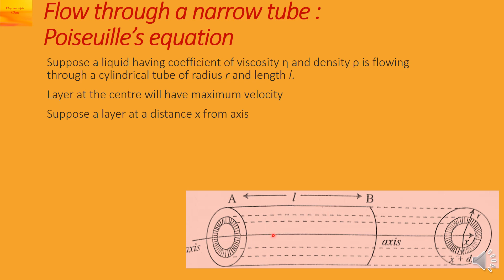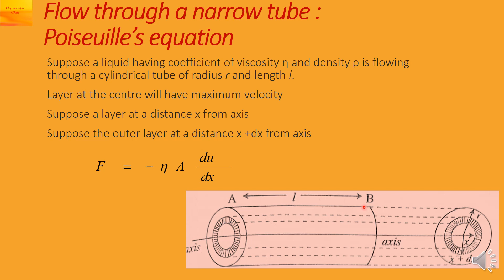The layer at the center will have maximum velocity. We will suppose a layer at a distance x from the axis. The outer layer is assumed to be at a distance x plus dx from the axis.